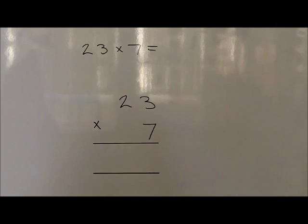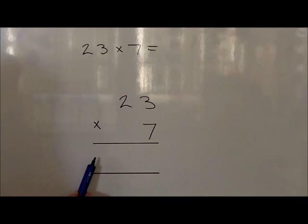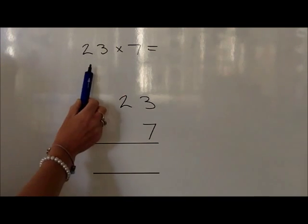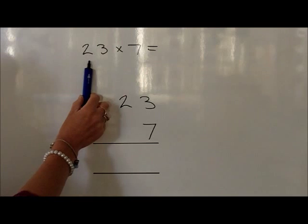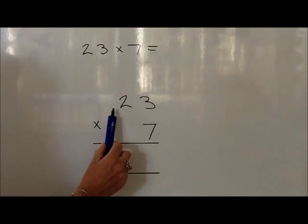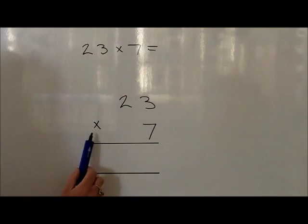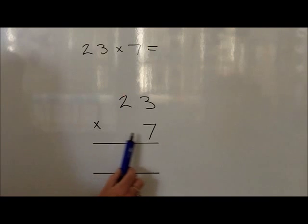When children become more confident and competent with their multiplying, we can move on to short multiplication. For example, with 23 times by 7, we write the 23 on the top and multiply this all by 7.